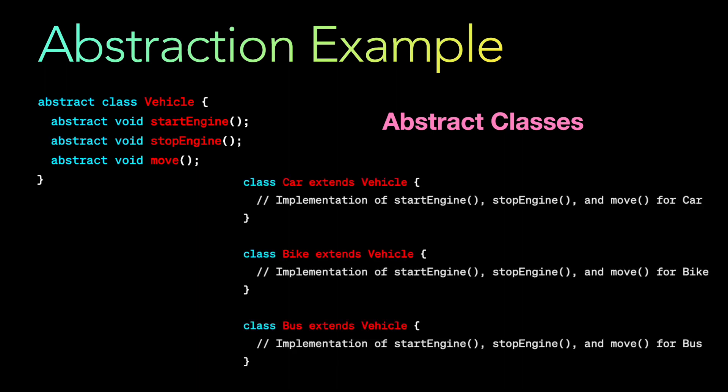The implementation will happen via extension. Since this is a class in Java, another concrete class — for example Car, Bike, or Bus, which are all vehicles — will extend the Vehicle abstract class. This is also a type of inheritance. For example, the Car class extends the Vehicle class, and inside that you can add the implementation of start engine, stop engine, and move for a car.